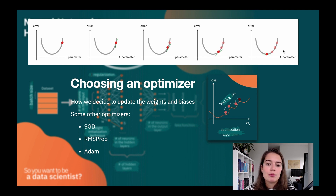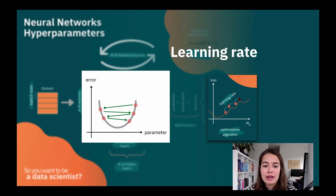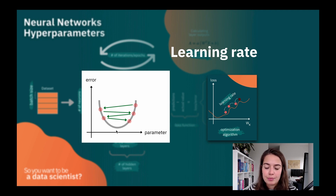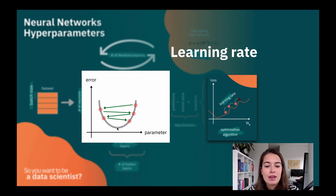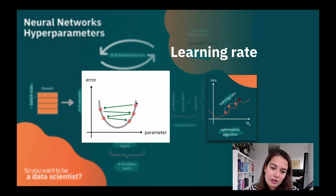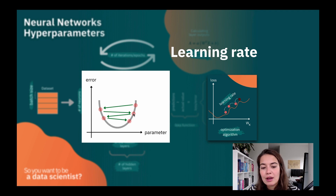If you set a very big learning rate, you might keep overshooting the minimum. Maybe you were close and a smaller learning rate would have landed you near the minimum, but with a very high rate, gradient descent sends you past it to the other side, and then the same thing happens again and again — you constantly overshoot and never reach the minimum.